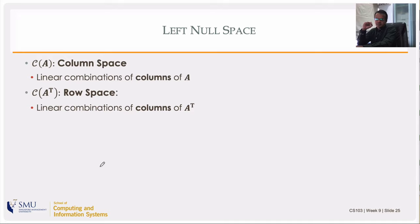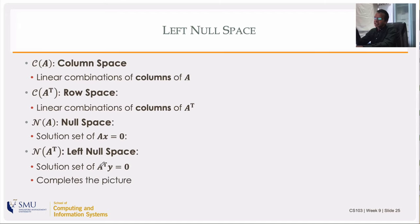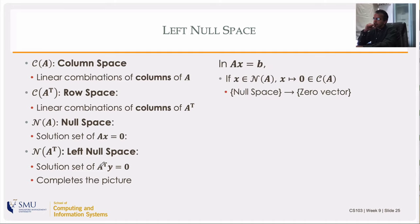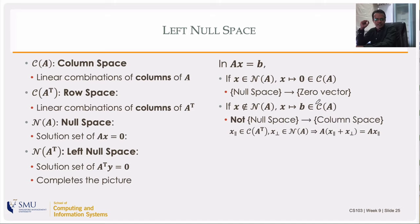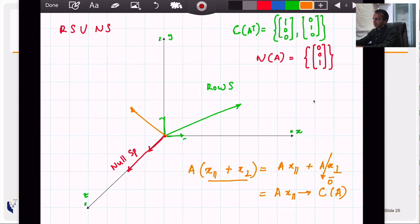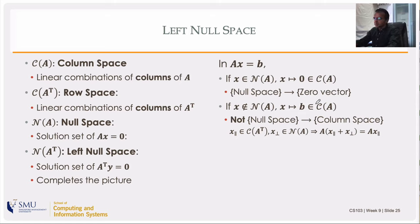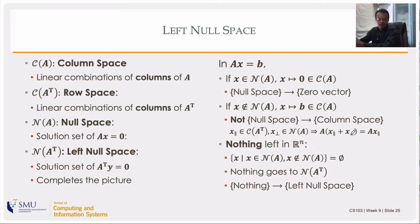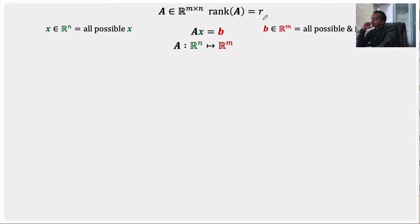Now I owe you the fourth space: the left null space. The column space is the span of the columns of A; the row space is the span of the columns of Aᵀ; the null space is the solution set of Ax = 0. The left null space is the solution set of Aᵀy = 0. Vectors in the null space go to zero under Ax = b. Vectors not in the null space go to the column space. Nothing is left to go to the left null space.